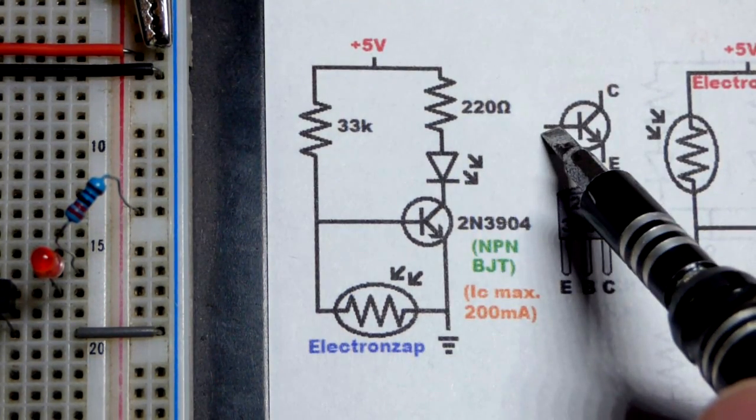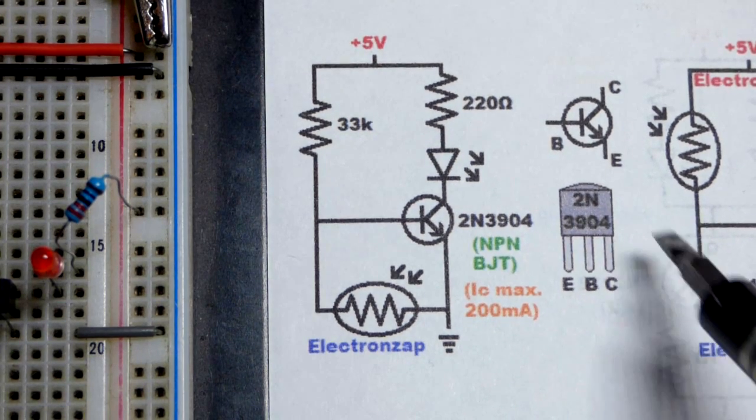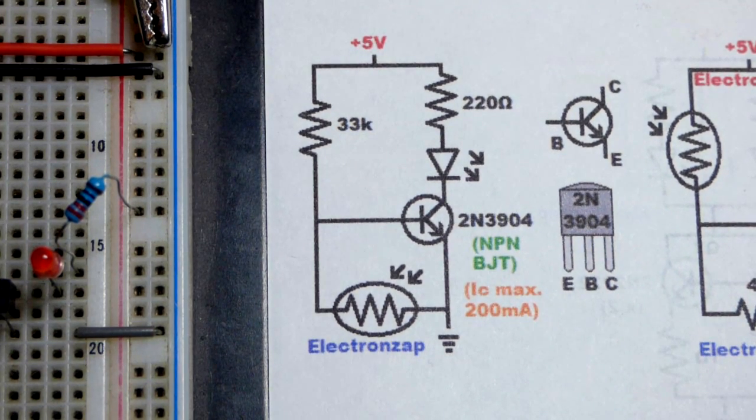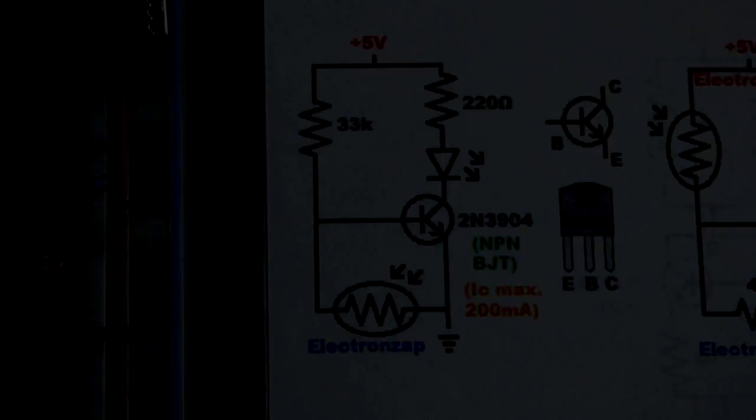So we got the collector on top, base there, and emitter over there. If you're using the 2N3904, other transistors may have a different pin layout. So make sure you check their datasheet before you use them.